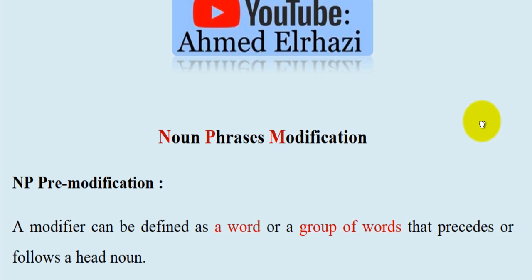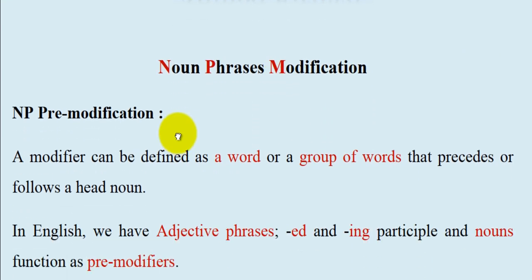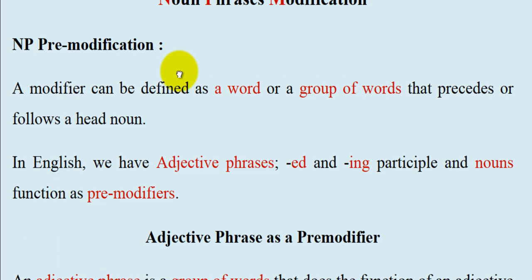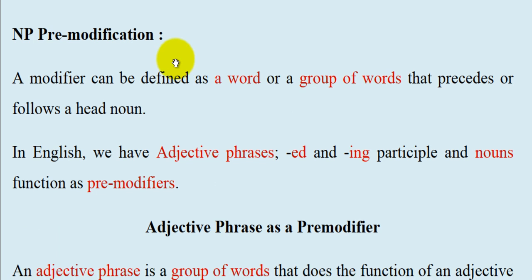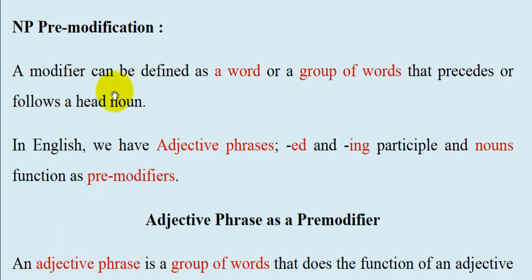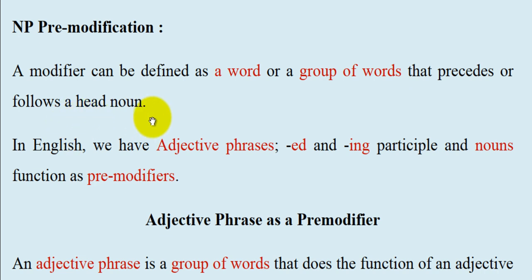As-salamu alaykum wa rahmatullah. Today we will look at noun phrase modification, specifically noun phrase pre-modification. We have pre-modification and post-modification. A modifier can be defined as a word or a group of words that precedes — that comes before — or follows after a head noun.